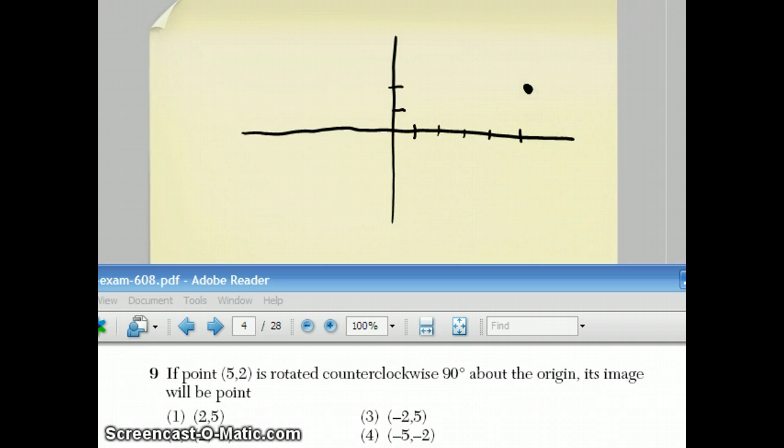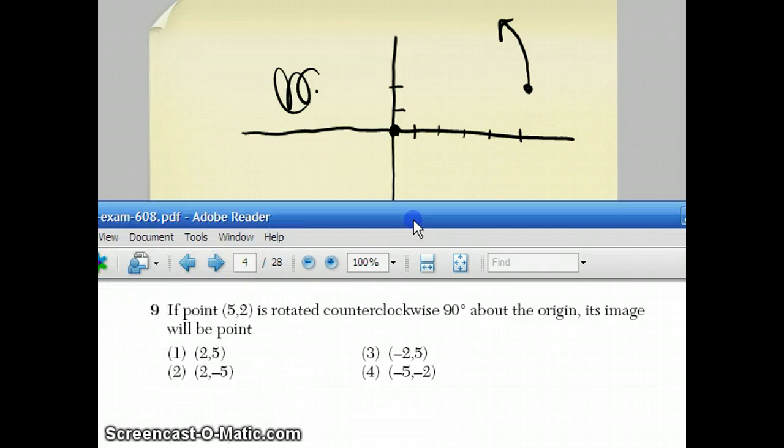First of all, when you rotate this point counterclockwise, counterclockwise is going sort of this way around the origin. So when you rotate 90 degrees counterclockwise, you are going to end up somewhere in quadrant 2. And already from, just based on that, you could probably get your answer choice.